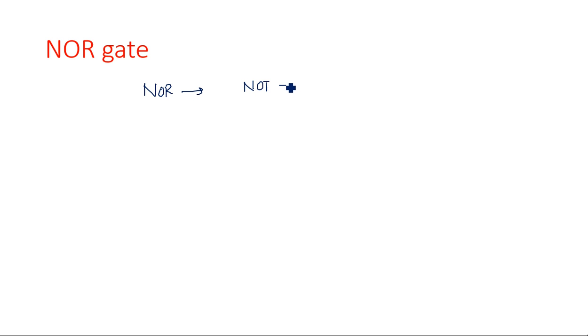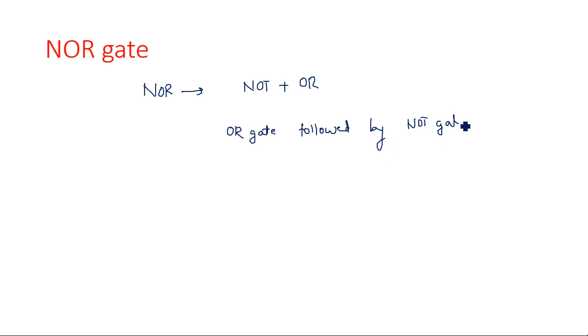Hi everyone. In this video I am going to discuss about another type of universal gate, which is the NOR gate. By seeing the NOR expression, we can say it is NOT plus OR operation. So, it is an OR gate followed by a NOT gate.